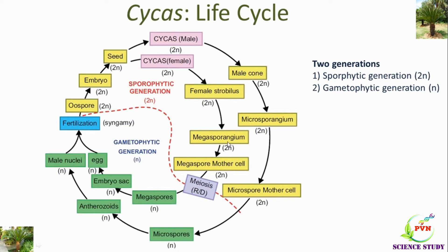The oospore develops into embryo and then into seed. When this seed germinates, it produces the male as well as the female Cycas plant separately. By this way we can see the two important processes are fertilization as well as meiosis. Meiosis is the step where the sporophytic generation ends and the gametophytic generation starts, while fertilization is the process from which the sporophytic generation starts and the gametophytic generation ends.